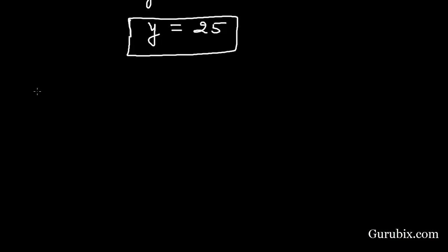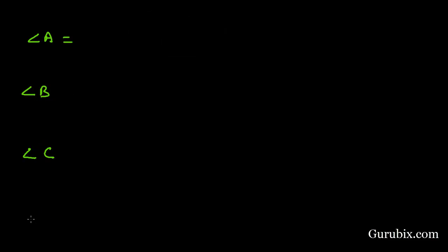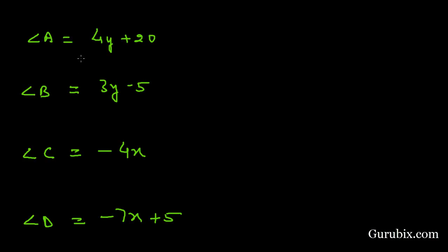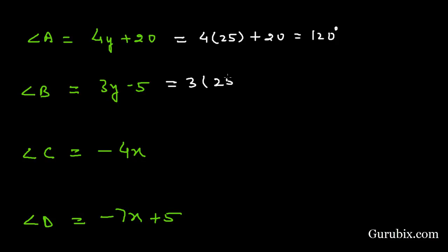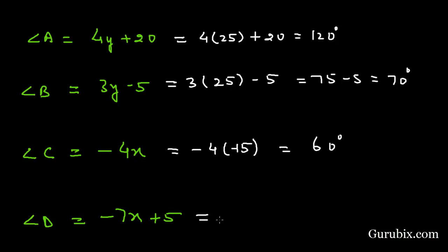Now we can find all angles of the cyclic quadrilateral. Angle A = 4y + 20 = 4(25) + 20 = 120°. Angle B = 3y - 5 = 3(25) - 5 = 70°. Angle C = -4x = -4(-15) = 60°. Angle D = -7(-15) + 5 = 105 + 5 = 110°. This is the solution. Thank you.